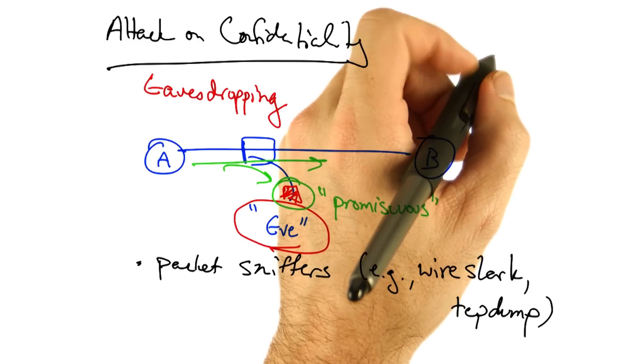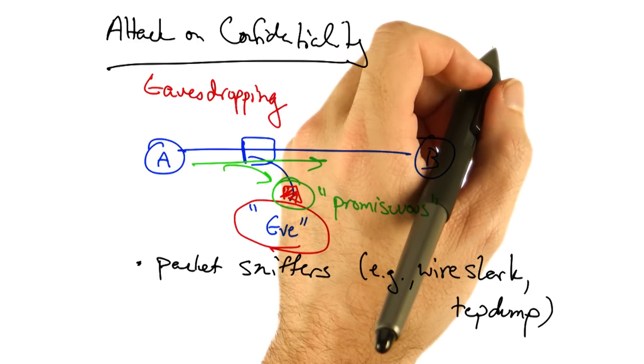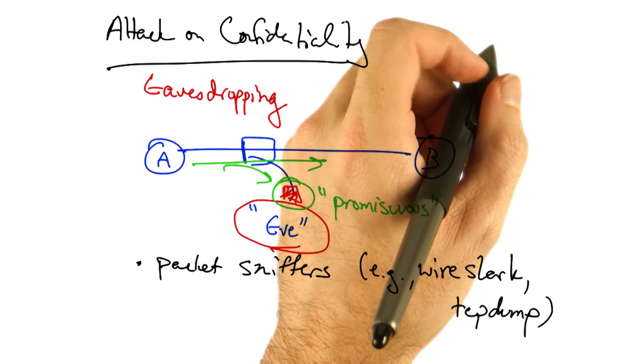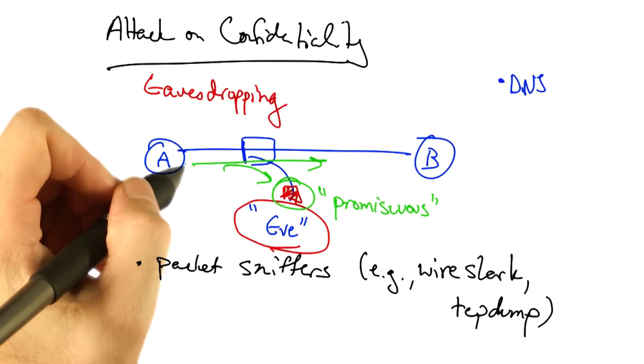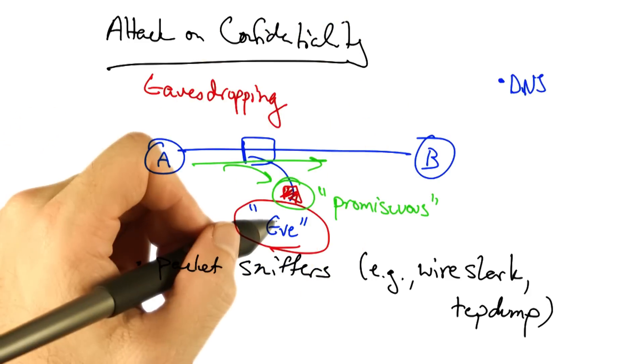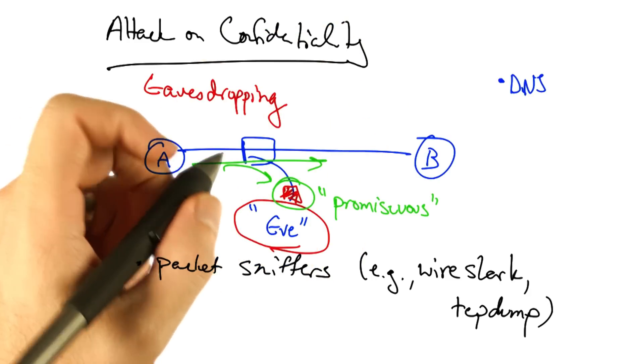It's worth thinking about how different types of traffic might reveal important information about communication. For example, the ability to see DNS lookups would provide the attacker information about what websites you're visiting.